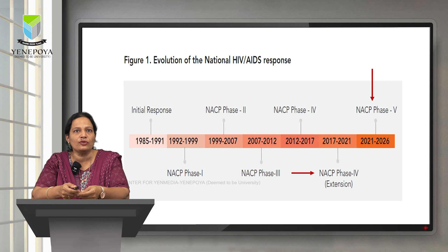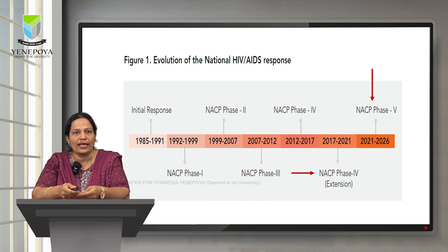National AIDS Control Program was launched in 1987 focusing on HIV screening and educational activities. The aim was to prevent further transmission of HIV, decrease morbidity and mortality associated with HIV infection, and minimize the socio-economic impact resulting from HIV infection. The initial response to this infection was in the year 1985 to 1991. Later, the National AIDS Control Program was launched in the year 1992 in a phase-wise manner, focusing on prevention and care modalities, and now NACP Phase 5 is presently in effect for the year 2021 to 2026.